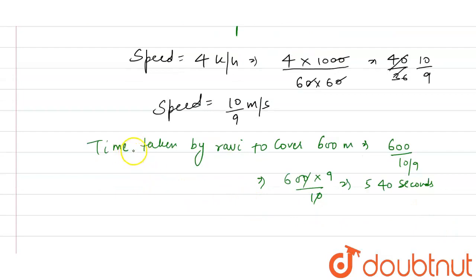To convert seconds into minutes, we divide by 60. So 540 divided by 60 equals 9 minutes.